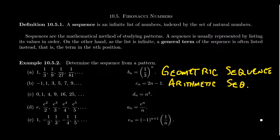Another sequence we could consider is the sequence of squares: 0, 1, 4, 9, 16, 25, 36, 49, etc. The general term would just be n squared in such a situation.